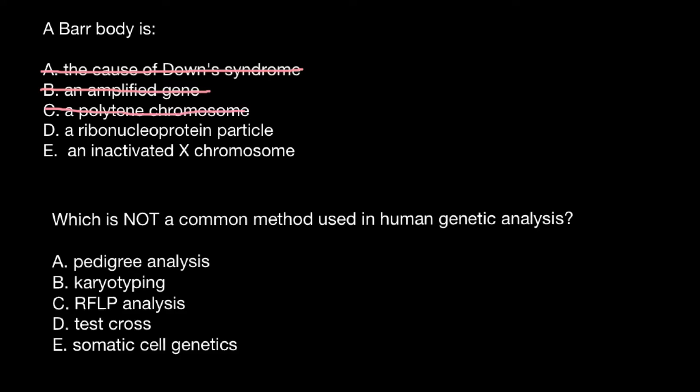We can cross out this also. Answer D, ribonucleoprotein particle. The ribosome consists of about 30 different proteins, and we need a gene for each protein to make, and also about 25 to 30 short RNAs. So it also doesn't explain our question statement, so we can cross out this also.